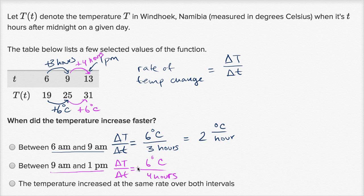You see that you've had the same change, but you've had to do it over more hours. So this is a lower rate of change. The temperature is increasing slower here. It took 4 hours to increase 6 degrees Celsius, while over here it took only 3 hours. So this is going to be faster.